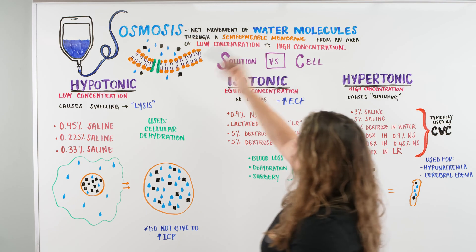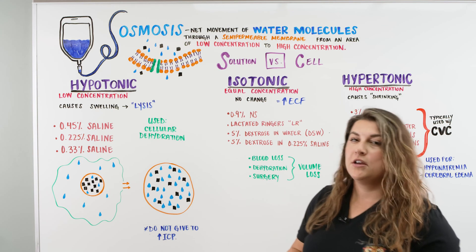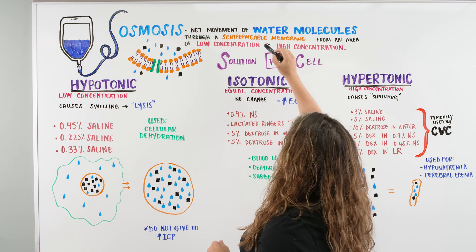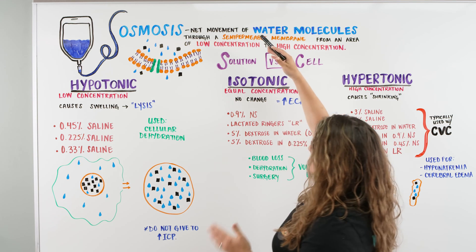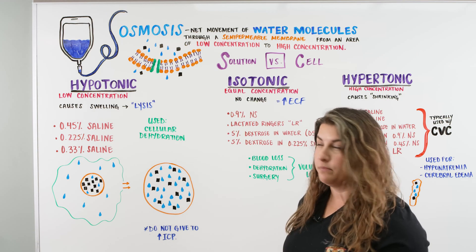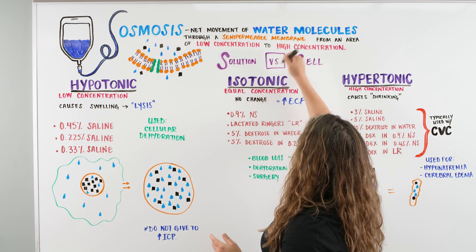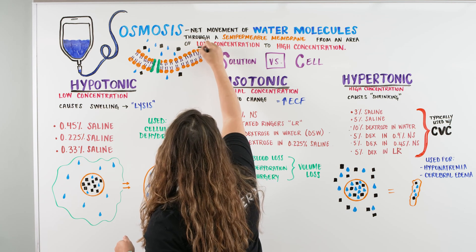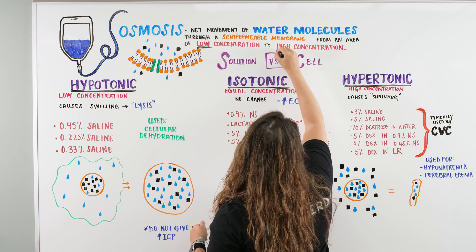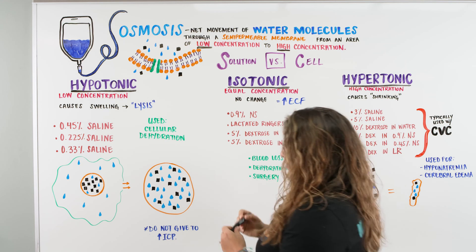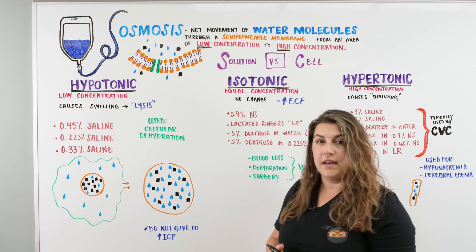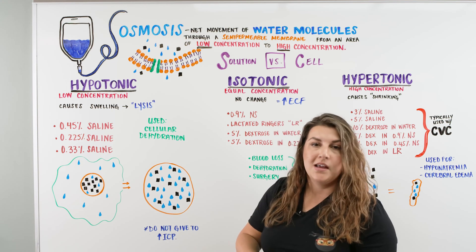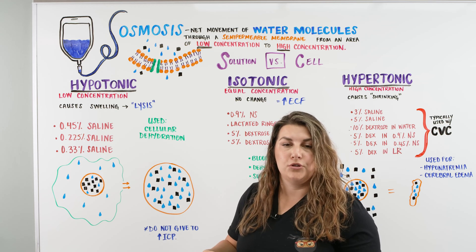Osmosis is the movement of water, right? When we give our patients crystalloid solutions, they're mostly made of water. And what we're looking at here is that water movement through a semi-permeable membrane, meaning some things will move through and some won't. And we're going from a low concentration to a high concentration. I want you to keep that in mind: low concentration to high concentration. And you're probably like, this still doesn't make any sense to me. I don't understand what hypotonic is, what isotonic is, what hypertonic is, and I don't understand what you mean by low concentration to high concentration.